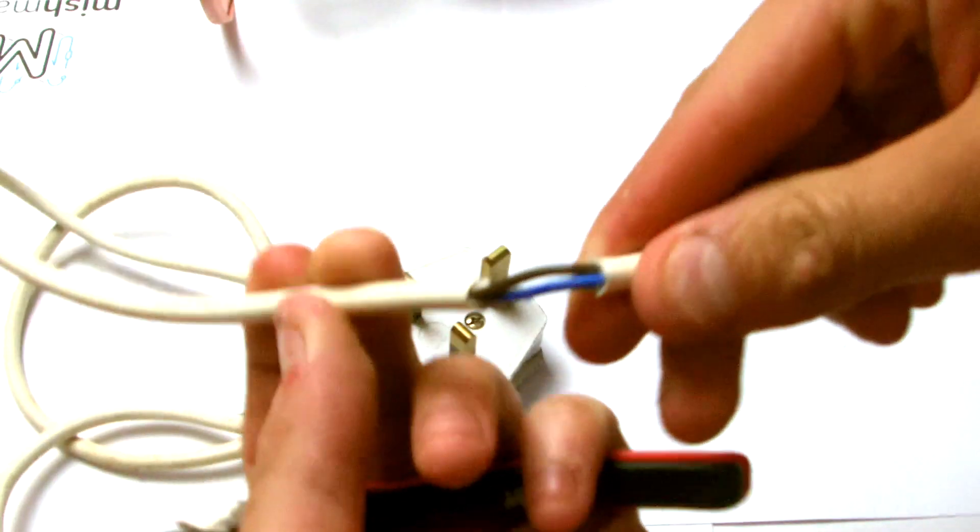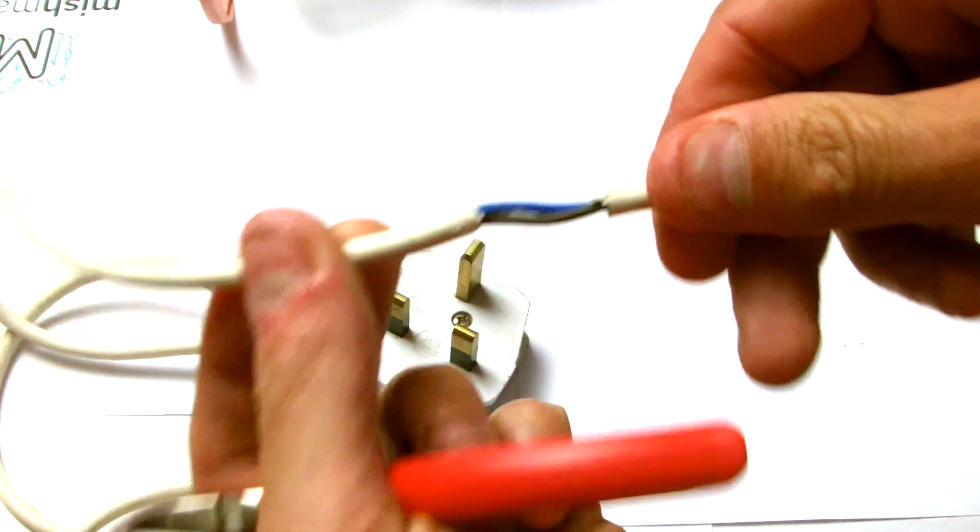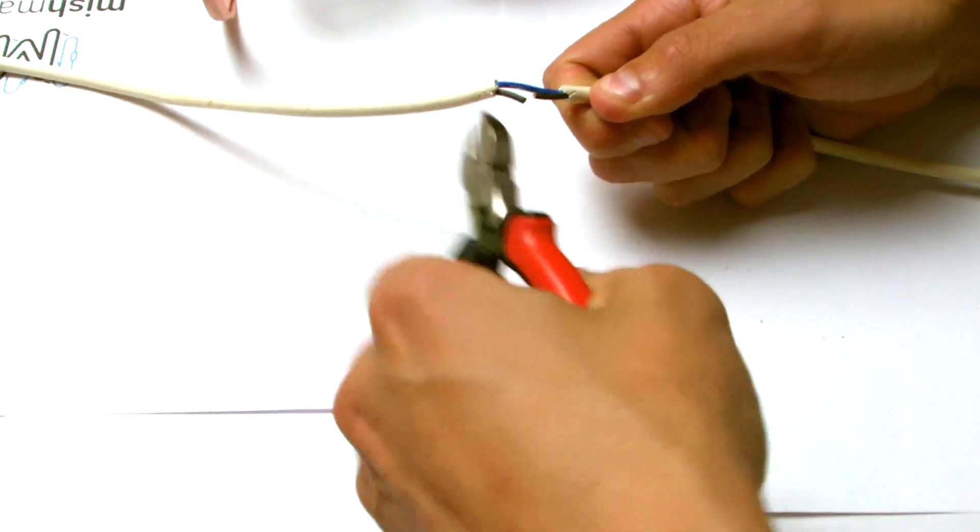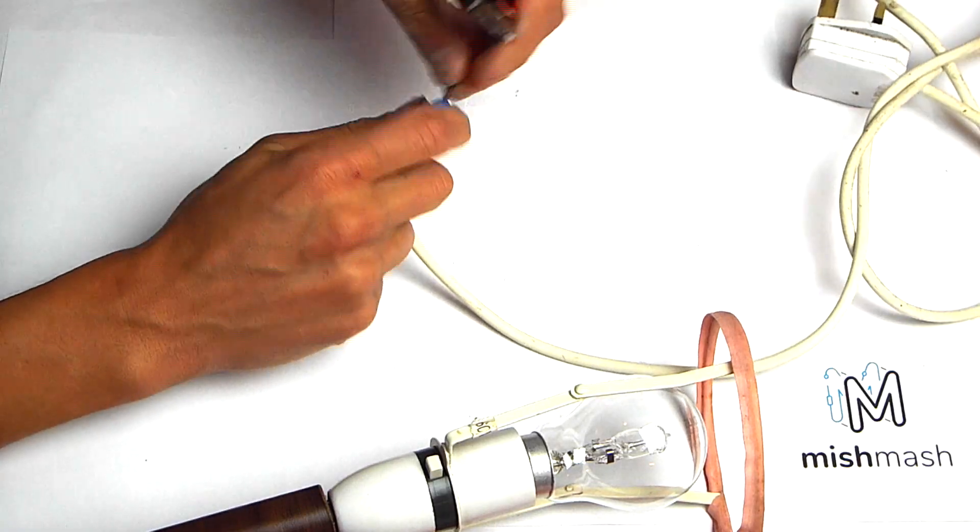Once the sheet is paired back and you've exposed the two inner cables, snip the brown cable, which in Ireland is alive, and operates at 230 volts AC.